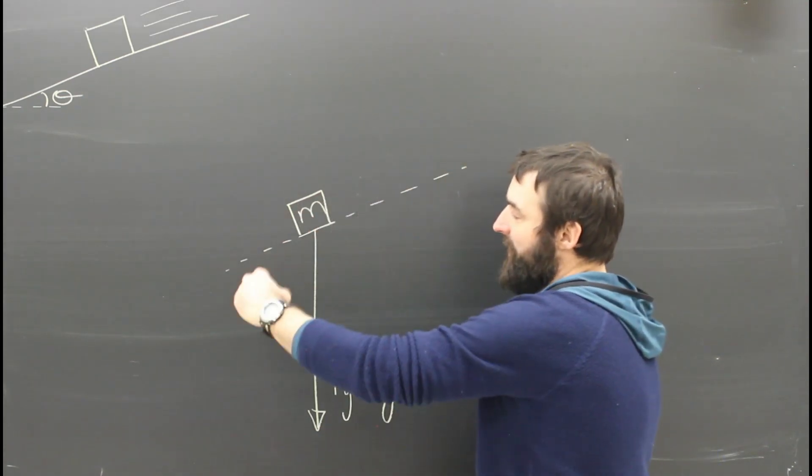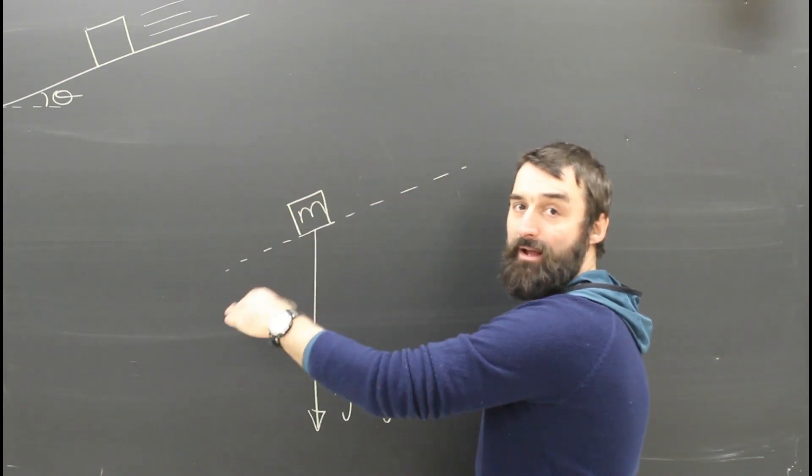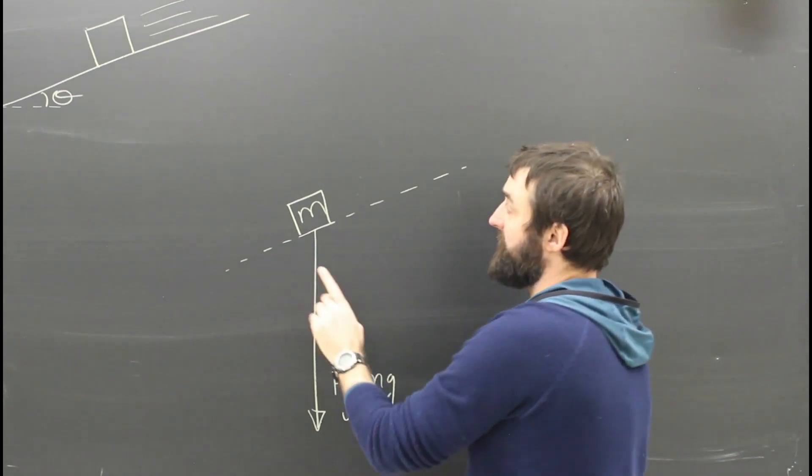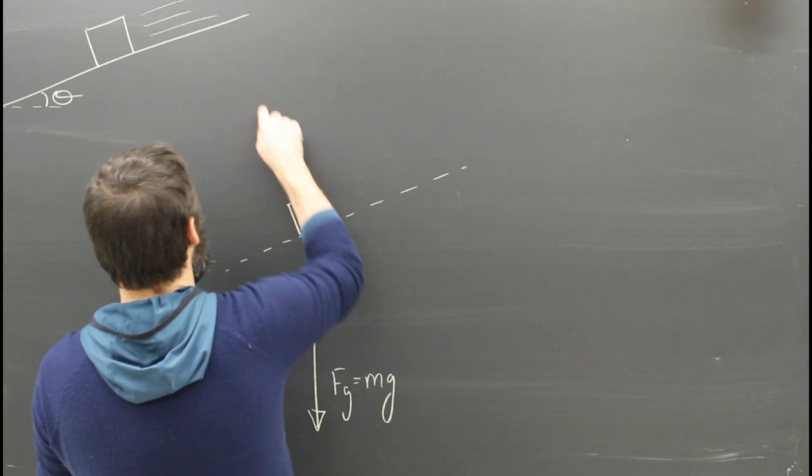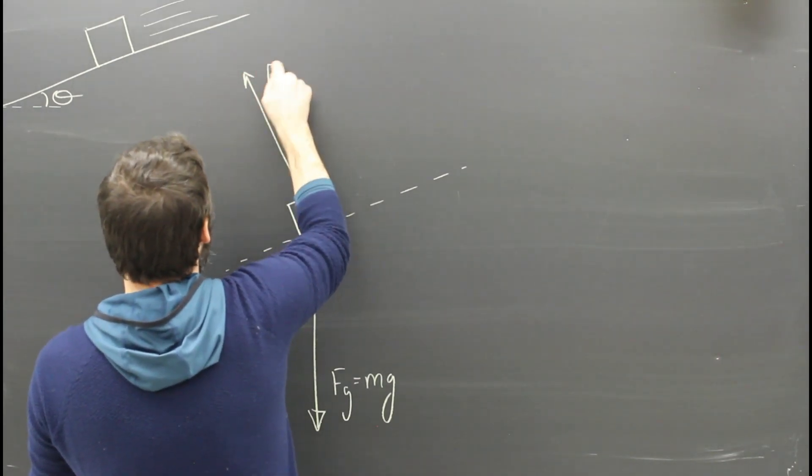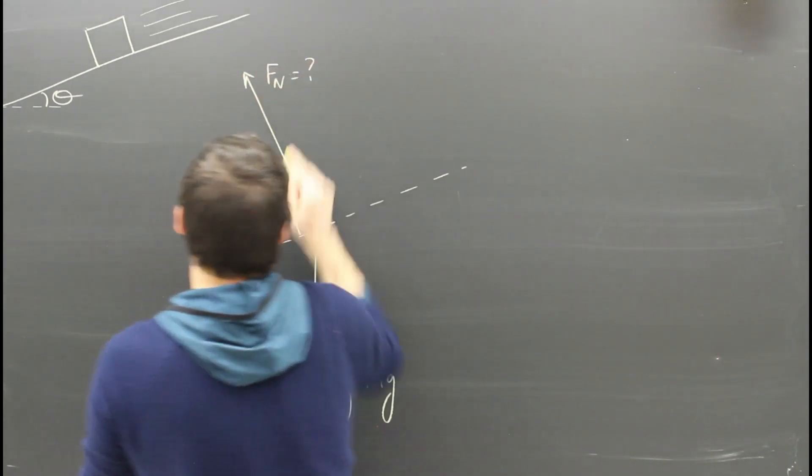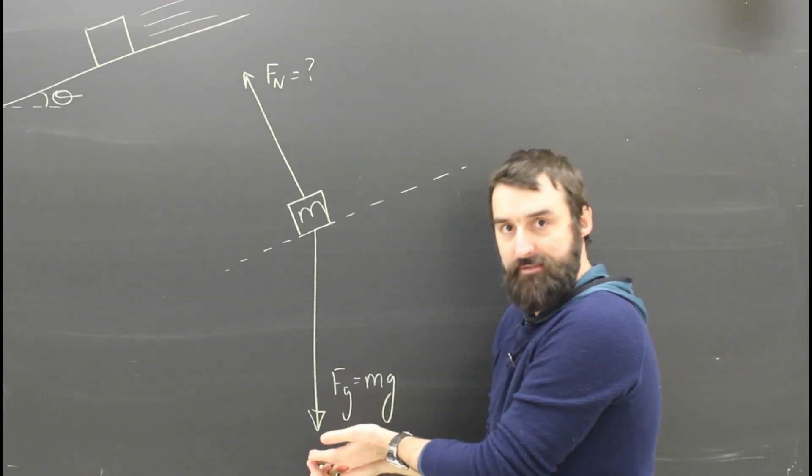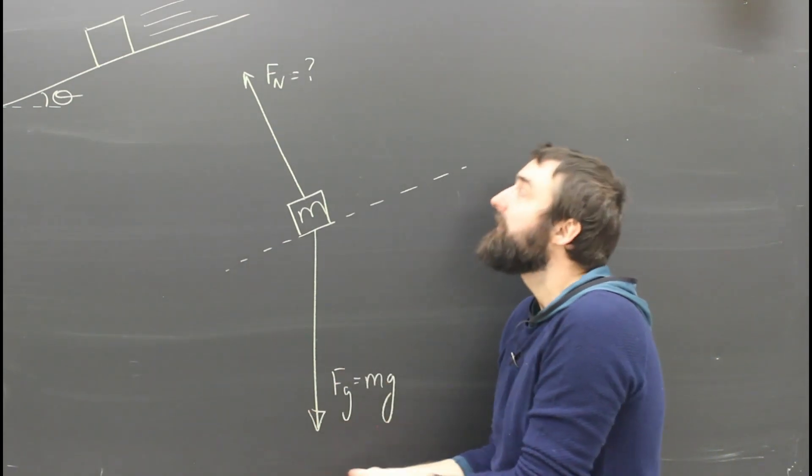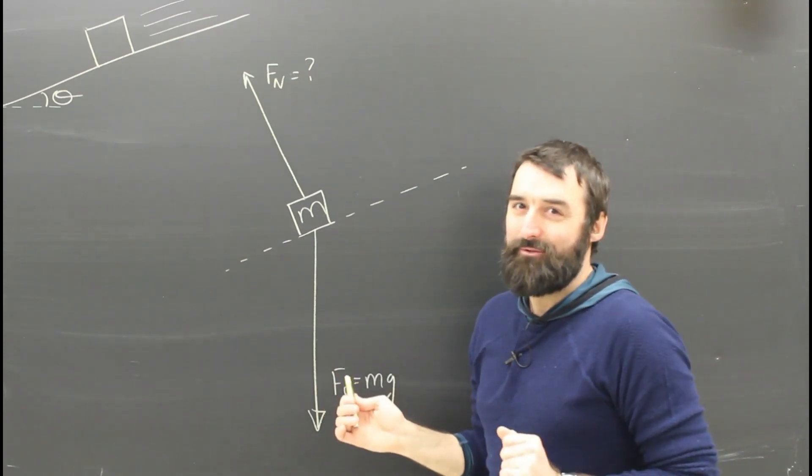This thing is on an incline. It's on the ramp. Which way is the normal force? It's going to be perpendicular to the surface, always, so boom. It's a little more obvious now, I hope, that we're not sure how big Fn is because clearly it's not equal and opposite to gravity in this case. In general, it's not equal and opposite to gravity.